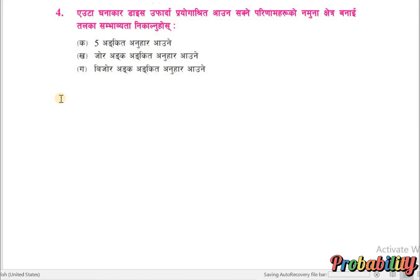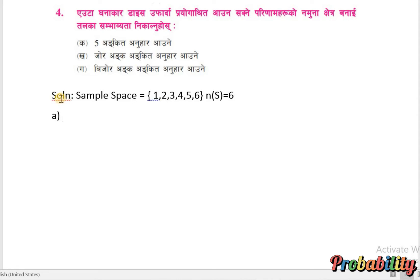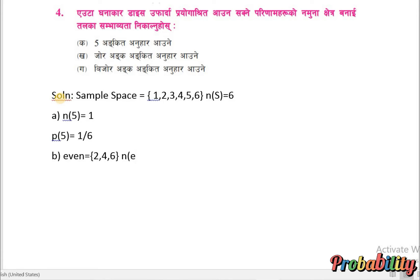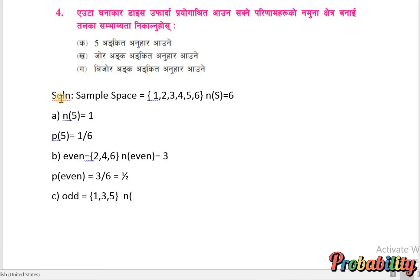For a dice roll, the sample space is 1, 2, 3, 4, 5, 6, so the number of sample space is equal to 6. The probability of rolling a 5 is equal to number of 5 upon number of sample space, which is 1 by 6. The probability of an odd number is 3 by 6.